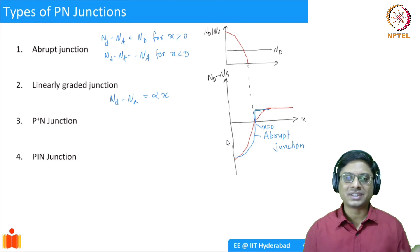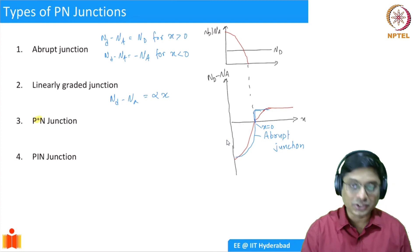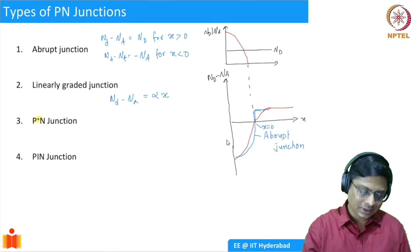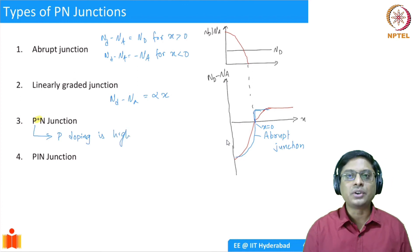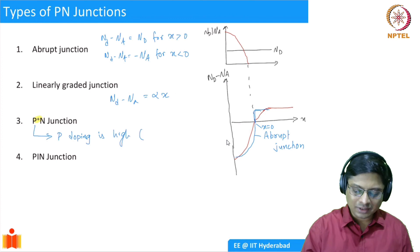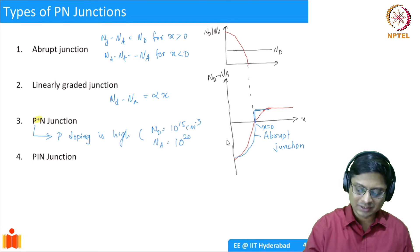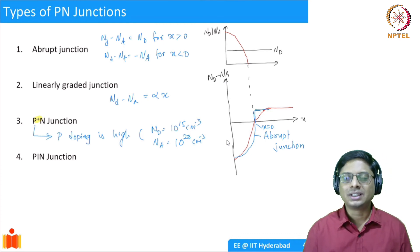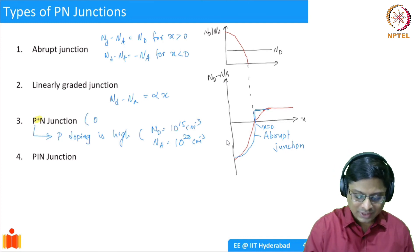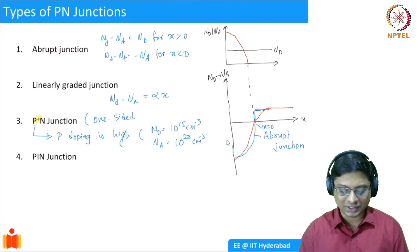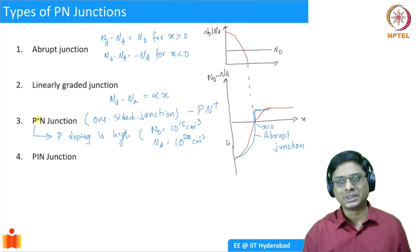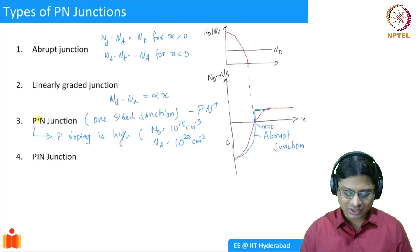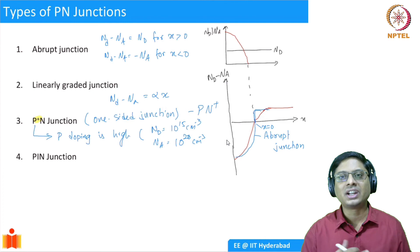You can also have what are known as P+N junctions. P+ means the p-type doping is high — highly doped relative to the n-type doping. For example, if Nd is 10^15 cm⁻³ and Na is 10^19 or 10^20 cm⁻³, the p is highly doped relative to n — that's why we call it a P+ junction. These are sometimes called one-sided junctions, which will become clearer in the next couple of lectures. You could also have a PN+ junction, where n is highly doped relative to p. So in a P+N or PN+ junction, one material is highly doped and the other is moderately doped.